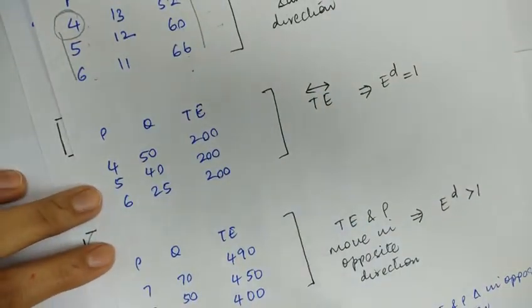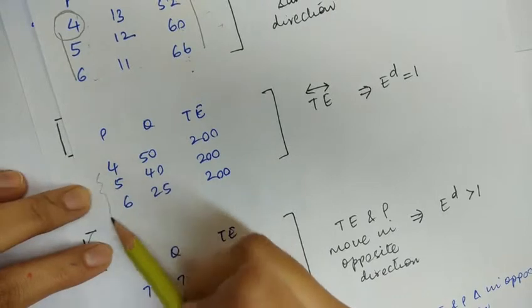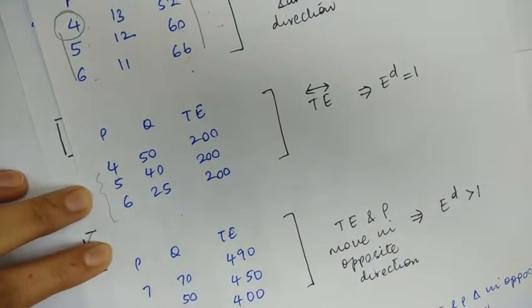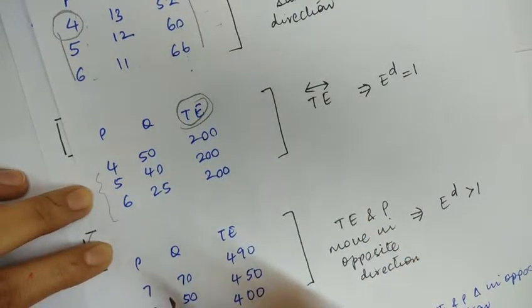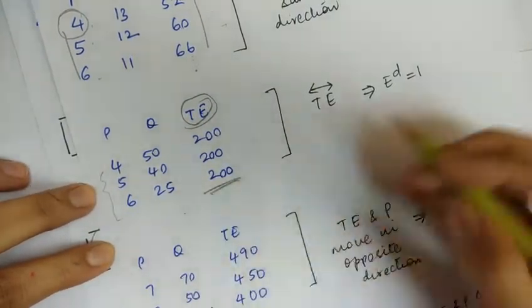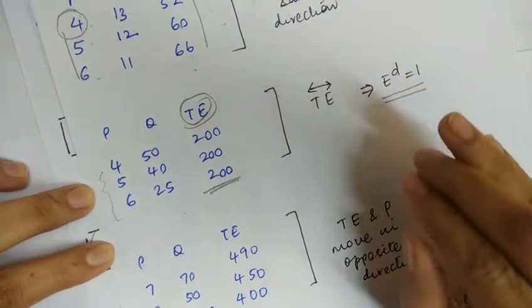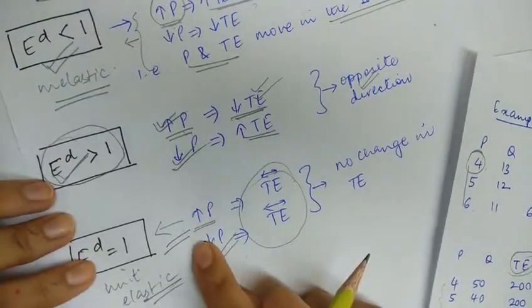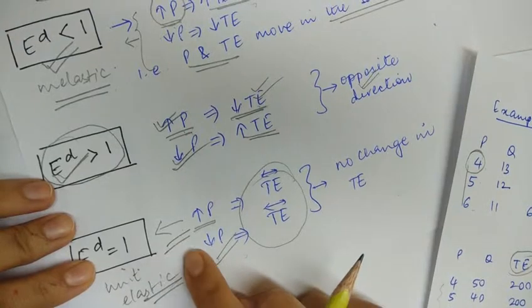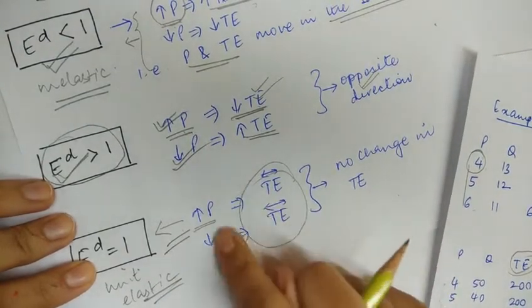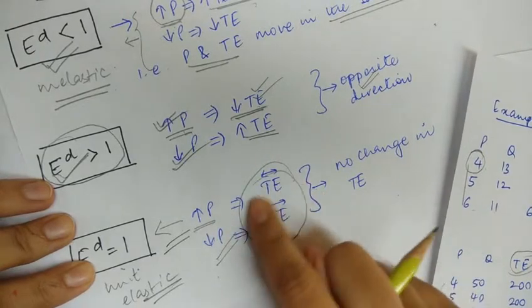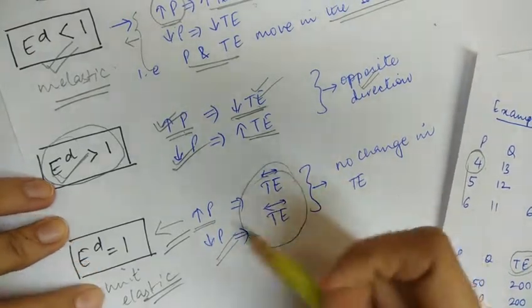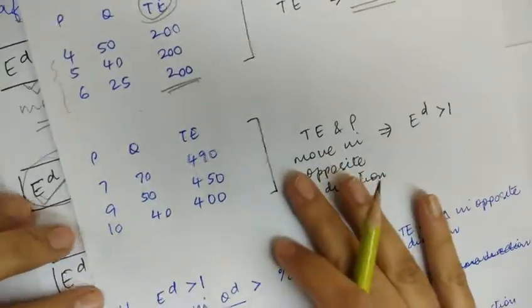In the next example, with the rise in price the quantity demanded falls, but the total expenditure on the commodity remains the same. In such a situation we say that the elasticity of demand is equal to one. Whether the price increases or decreases, if total expenditure remains constant, the elasticity of demand is equal to one.